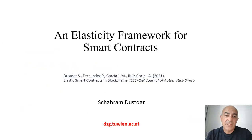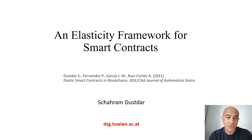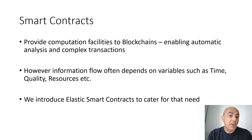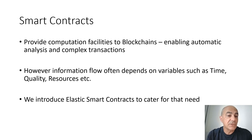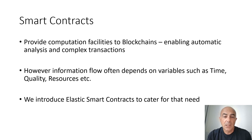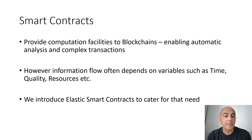Welcome to this talk on an elasticity framework for smart contracts. My name is Sharam Dostar from the Technical University of Vienna in Austria. Smart contracts have been developed some eight years ago. They provide computation facilities to blockchains, to enable automatic analysis and complex transactions. However, there is a problem when there is information flow that depends on variables such as time, quality, or resources.